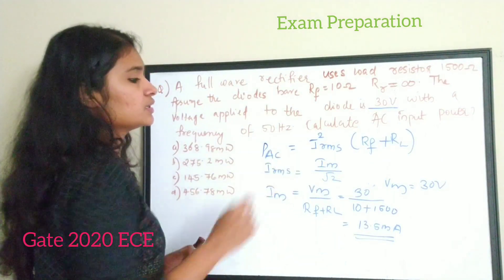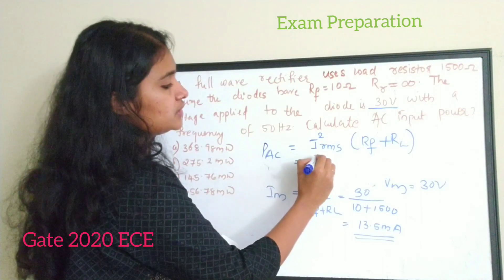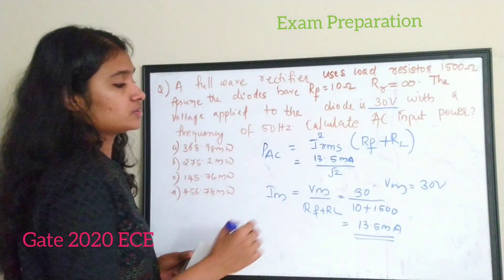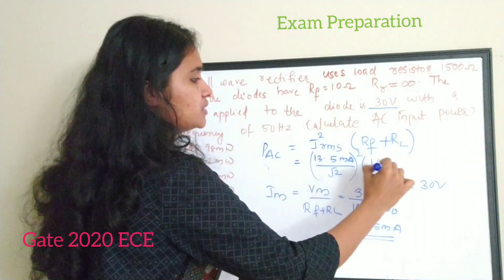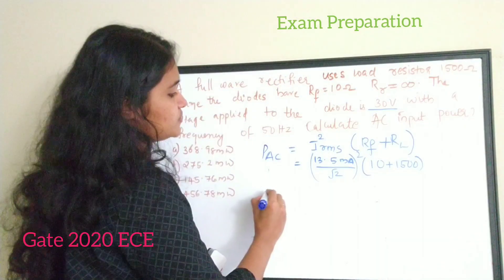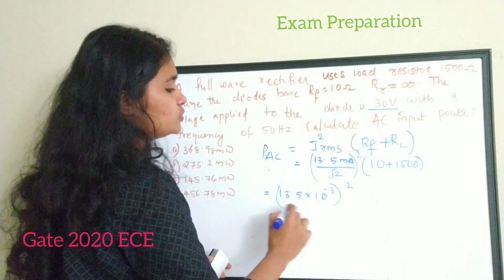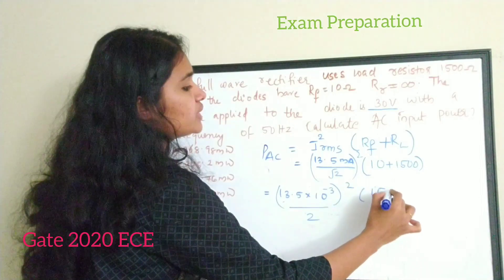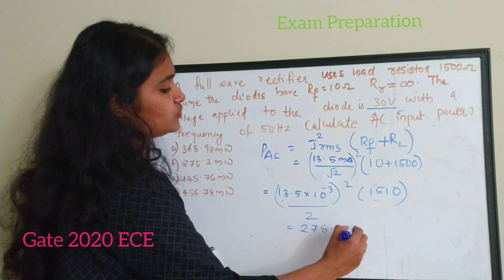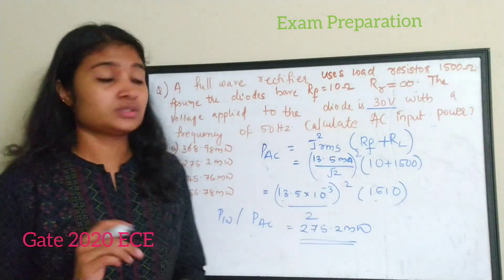Now substitute I_m into the power equation. I_rms equals I_m divided by root 2, so P_ac equals (I_m / root 2)² times (r_f + R_L), which equals (13.5 × 10⁻³)² divided by 2, times 1510. Solving this gives P_ac equal to 275.2 milliwatt. The correct answer for this question is option B.